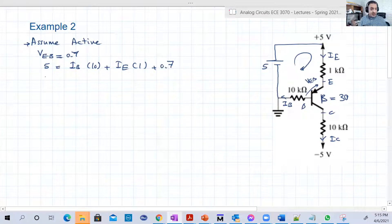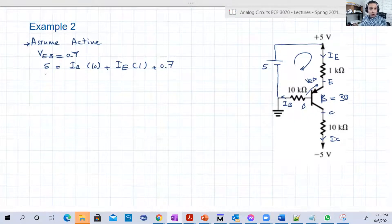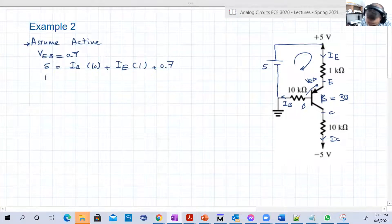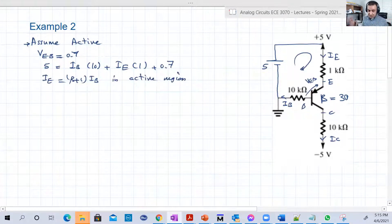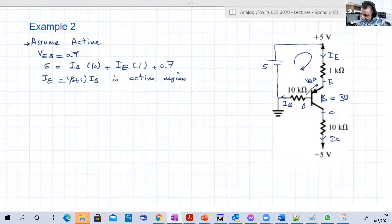Remember, either in active or saturation, IE is equal to beta plus 1 IB in active region. In saturation, IE is equal to IC plus IB, that's it. And beta is known here, it's 30.